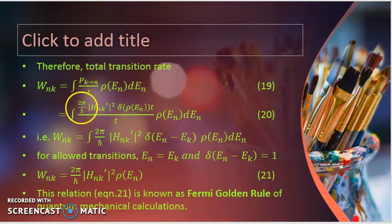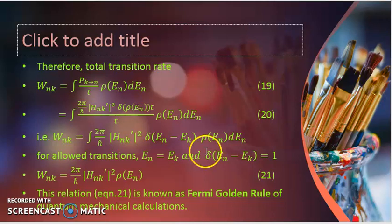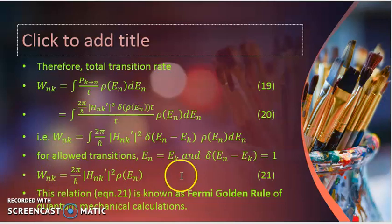The total transition rate W(n←k) equals the integral of P(k→n) per unit time t times the number of states ρ(E_n)dE_n. Writing the expression for P(k→n) and noting that the t factors cancel, this equals the integral of (2π/h-cross) |H'_nk|² delta(E_n minus E_k) ρ(E_n) dE_n. Using the property of the delta function, which equals 1 when E_n equals E_k (the allowed transition under constant perturbation), we get the total transition rate W_nk equal to (2π/h-cross) |H'_nk|² ρ(E_n). This relation is known as Fermi's golden rule of quantum mechanical calculation.